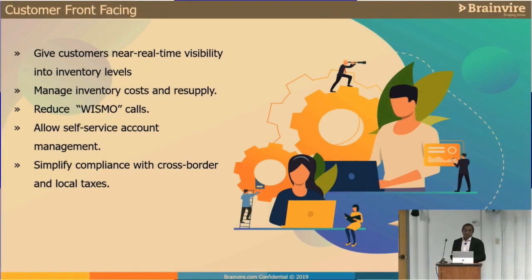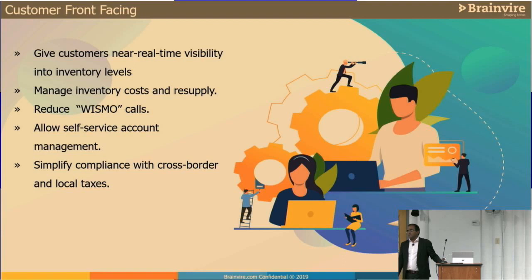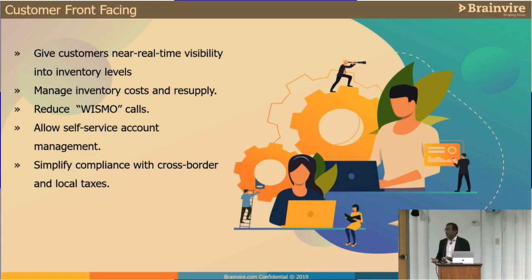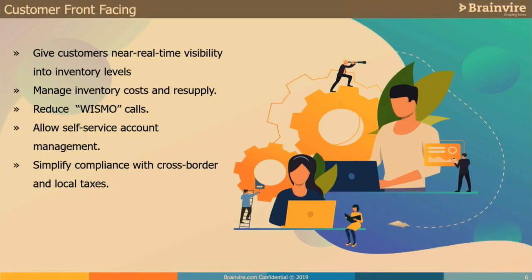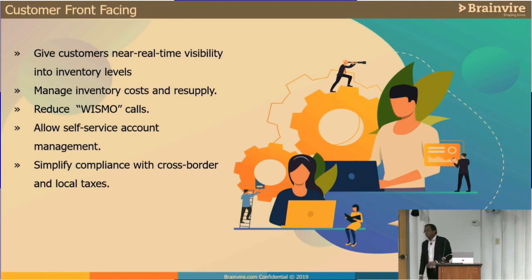Key requirements include managing inventory cost and resupply, and reducing Wismo calls — 'Where is my order?' Once a customer makes a purchase, they want to know the status, where it is, when it ships. You need to make sure that data is available across multiple locations — whether it's a bot answering questions, an online status page, email updates, text messages, or push notifications. Customers also want self-service account management; they want to drive themselves rather than depend on a customer service team. And compliance with cross-border and local tax, with multi-language, multi-currency, and localized experience.